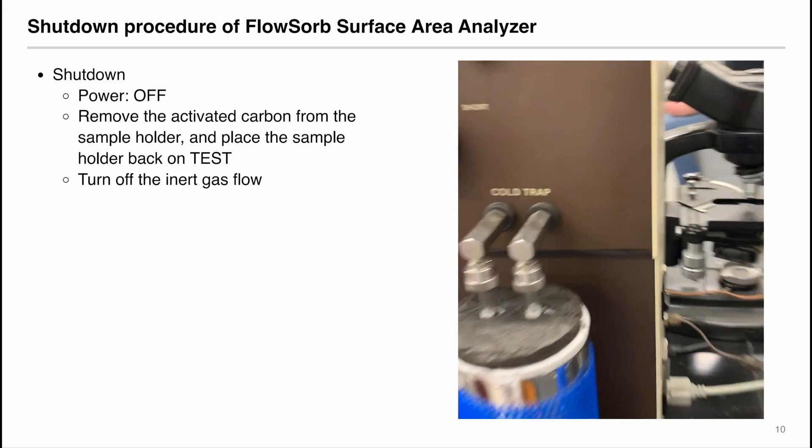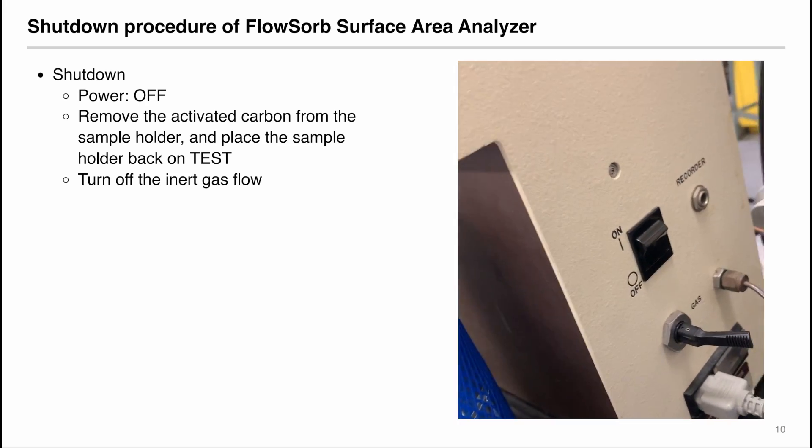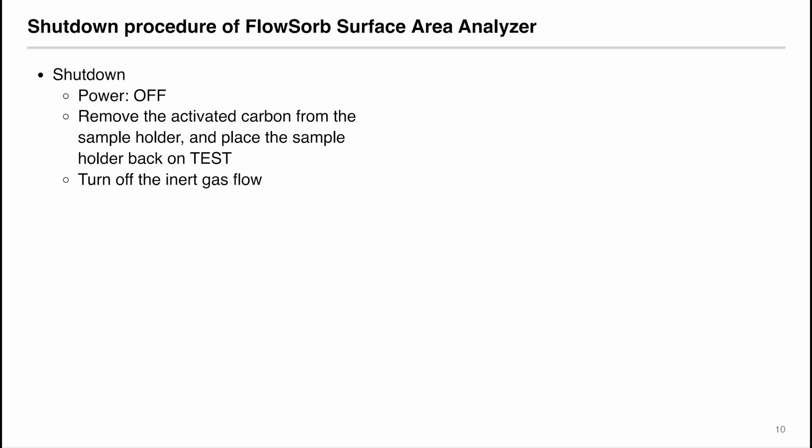To shut down the instrument, first turn the power off. Then remove the activated carbon from the sample holder and then place the sample holder back on test position. As the last step, turn off the inert gas flow.